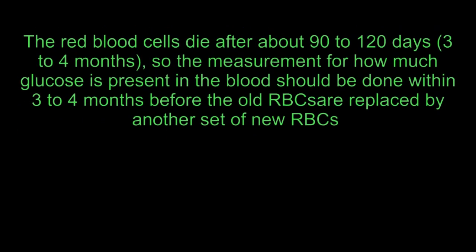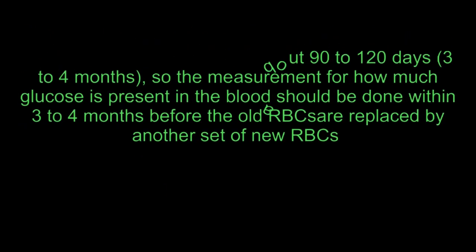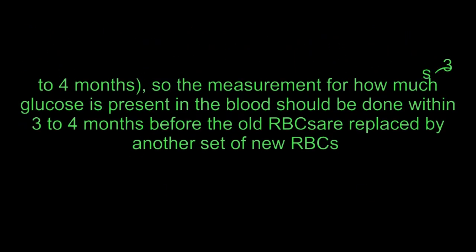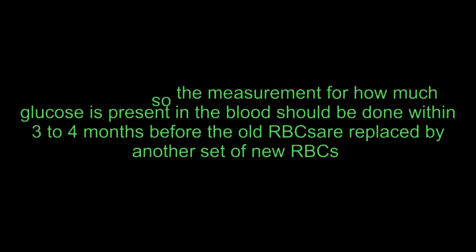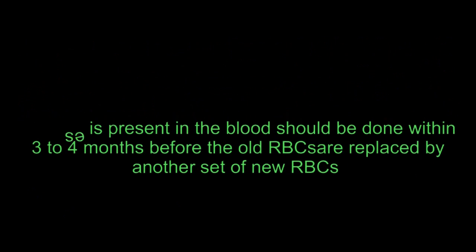The red blood cells die after about 90 to 120 days, or 3 to 4 months, so the measurement for how much glucose is present in the blood should be done within 3 to 4 months, before the old RBCs are replaced by another set of new RBCs.